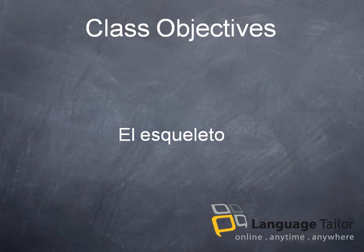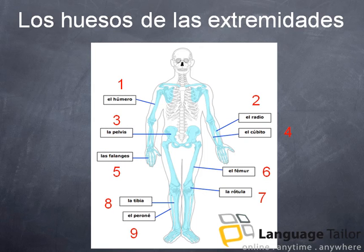Hoy vamos a continuar estudiando el esqueleto y algunas de sus partes. Los huesos de las extremidades. Por favor, vean la fotografía. Las partes en azul son los huesos. Perfecto. Hay nueve partes aquí. Vamos a leer.